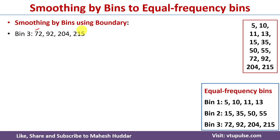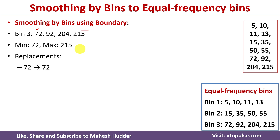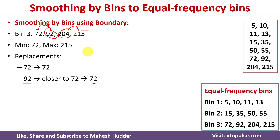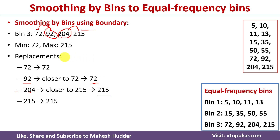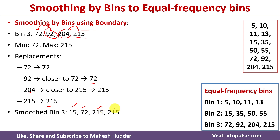For the third bin, the minimum value is 72 and maximum value is 215. If you observe carefully, 92 is closer to 72, so we replace 92 with 72. And 204 is closer to 215, so we replace 204 with 215, and 215 stays as it is. The smoothed bin 3 becomes: 72, 72, 215, 215.